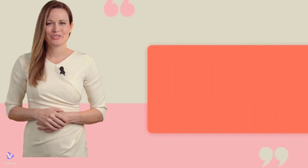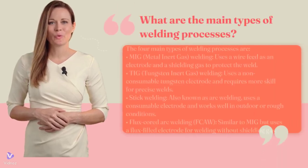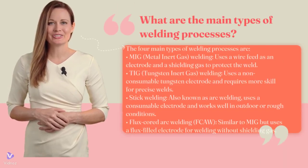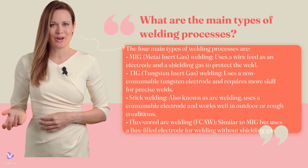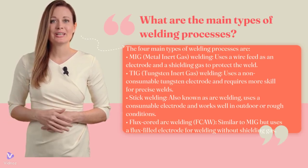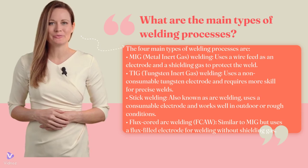What are the types of welding processes? The welding processes: MIG welding uses a wire feed as an electrode and a shielding gas to protect the weld.